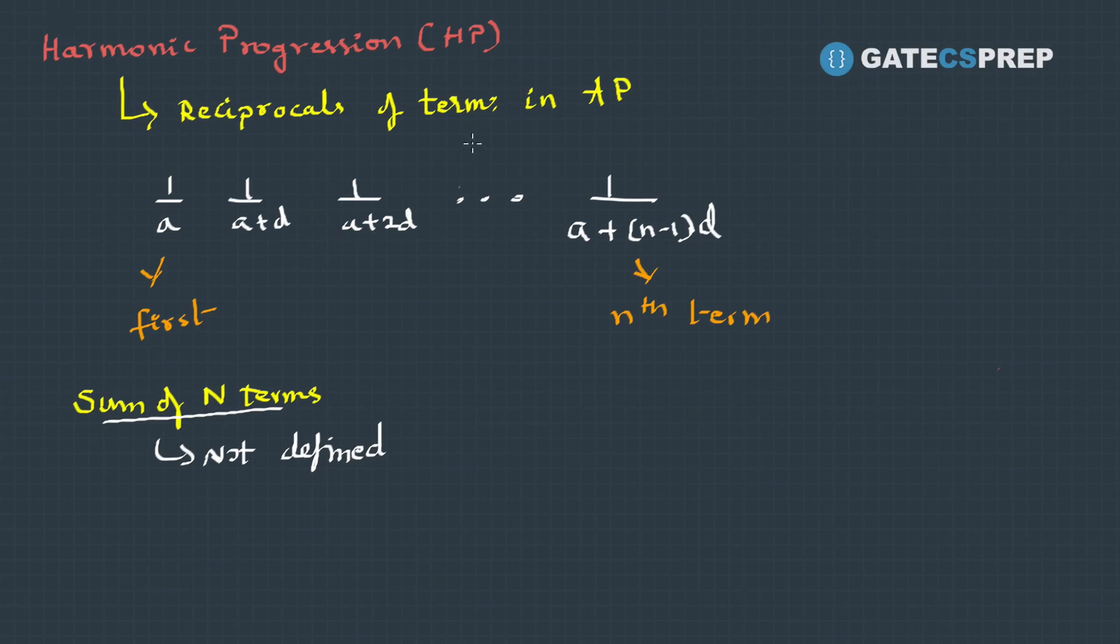The summation of the terms in HP is given a name—it's called the harmonic number. The harmonic number Hn is the summation of n terms in HP, which can be written as Sigma(1/k) where k extends from 1 to n.